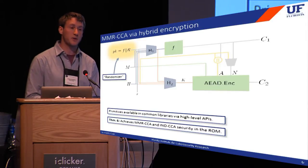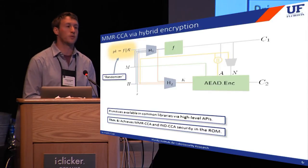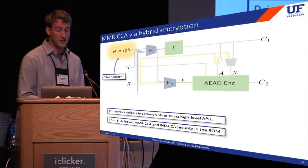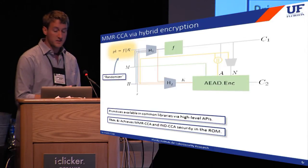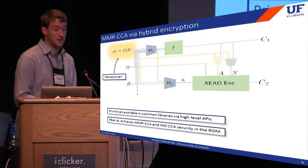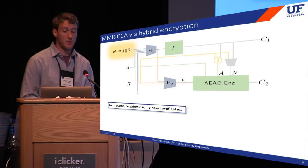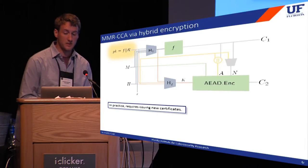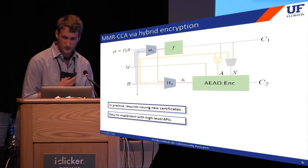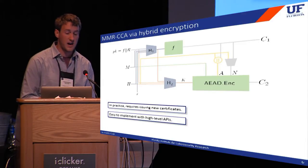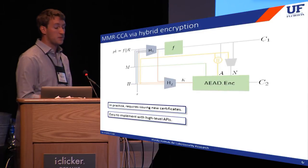The public key is not just the description of the trapdoor F — it also includes a short uniform random string called a randomizer. The randomizer is part of a technical trick that simplifies the proof of security and allows us to make no assumptions about the trapdoor permutation beyond one-wayness. It's borrowed from Bellari et al. and is widely used in the hedge PKE literature. A practical implication is that if you have a certificate for the trapdoor F, such as an RSA public key, adding the randomizer means you have to reissue a certificate. But otherwise, implementing this scheme is a straightforward matter of piecing together high-level API calls.